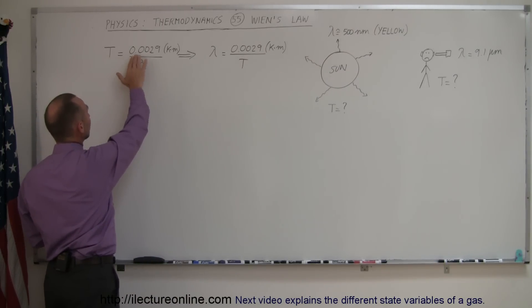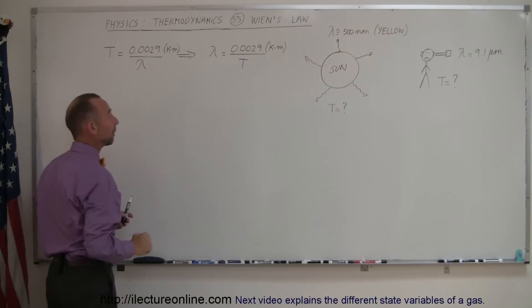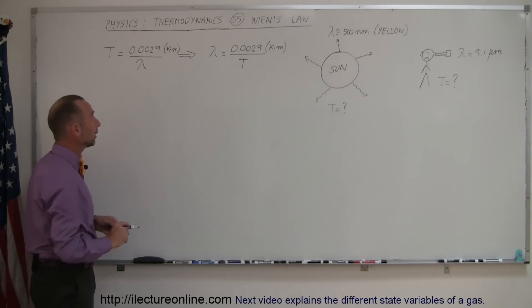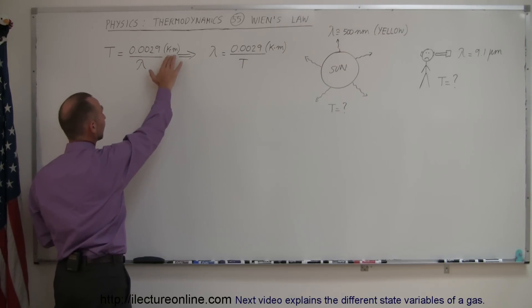The temperature in Kelvin is equal to 0.0029 which is the constant of proportionality divided by the wavelength of the radiation of the object. And of course the units here would be Kelvin times meters.